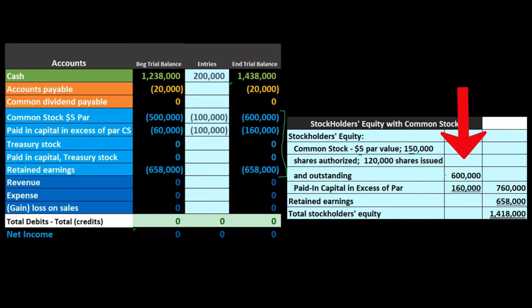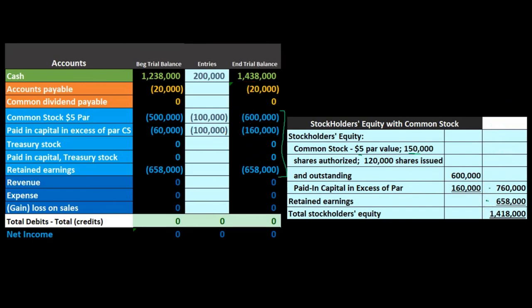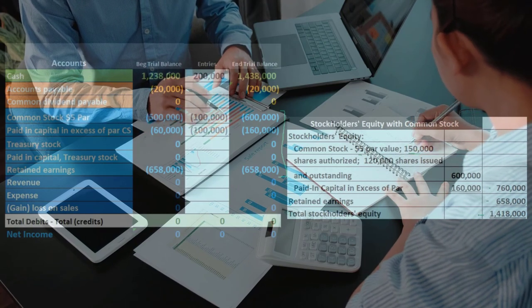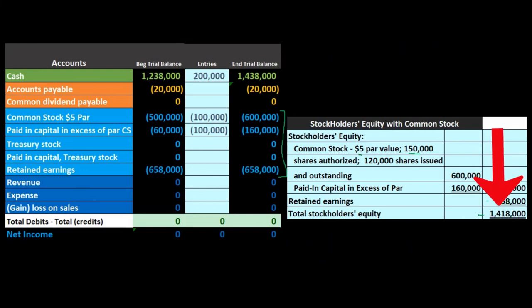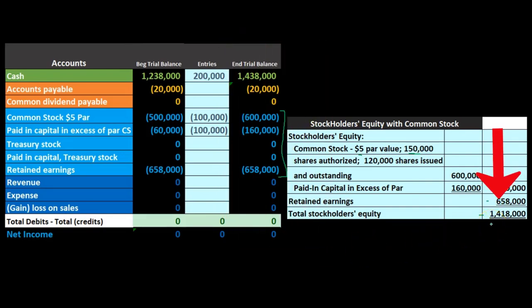We list the common stock amount of 600,000, then paid-in capital of 160,000. All that represents is how much we got paid over and above the par value. The 600,000 plus 160,000 — or 760,000 total — is what we actually received for selling our stock. Then retained earnings is the amount of earnings accumulated over the life of the business less anything taken out in the form of dividends. The 760,000 plus 658,000 equals 1,418,000, representing the total equity. This is the book value of the company — assets minus liabilities — the same concept as any entity: sole proprietor or partnership.